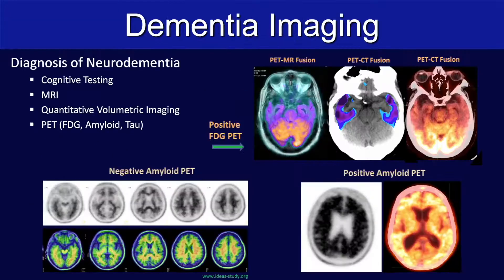The diagnosis of neurodementia typically starts with cognitive testing. The neurologist then often orders an MRI, and at this point, we'd like to encourage them to add on quantitative volumetric imaging. And sometimes a PET is also ordered — either FDG, amyloid, or tau — with FDG being ordered much more frequently since it's currently reimbursed.